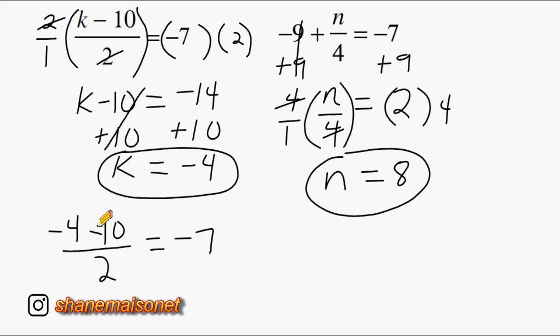Negative four minus negative 10 is negative 14. And negative 14 divided by two is in fact negative seven. So that one does check out.